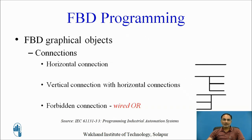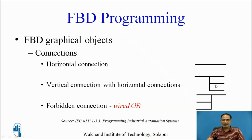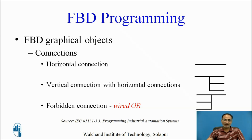There are four graphical objects used in functional block diagram programming. The first object is connections. In FBD you can have horizontal connections for connecting any two blocks or elements. Similarly, you can have vertical connections, or vertical connections with multiple horizontal connections. These connections are mainly used to connect different blocks or elements of a function block diagram. However, wired OR connections are forbidden in FBD programming.